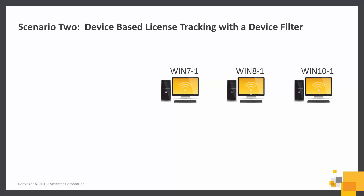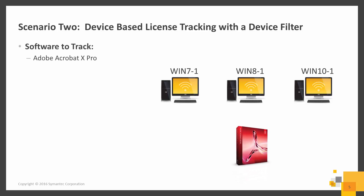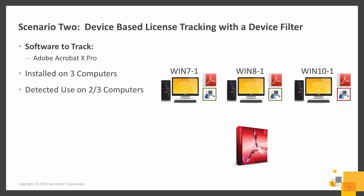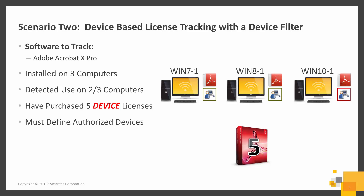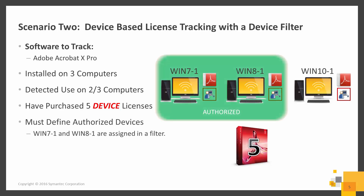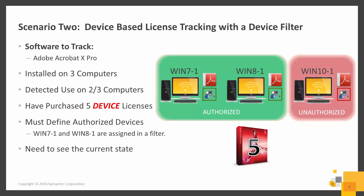In this scenario, we will demonstrate device-based license tracking using a device filter. We will be tracking Adobe Acrobat 10 Professional, installed on three computers with usage detected on two out of three. We have purchased and entered five device licenses. We will define authorized devices — in this case Win 7-1 and Win 8-1 are assigned in the filter — and we need to see the resultant current state.